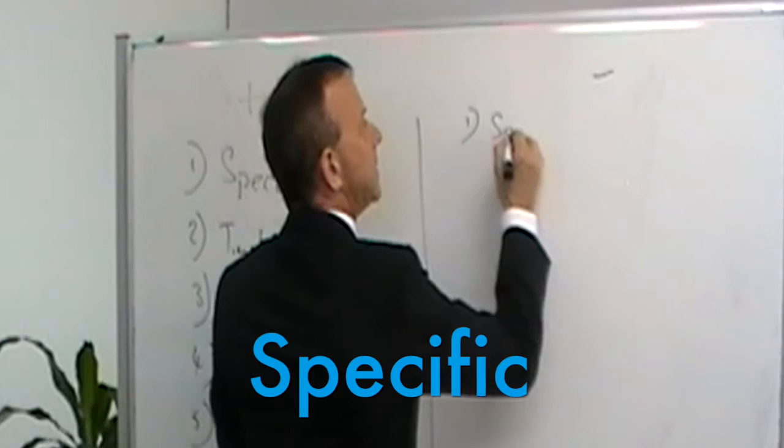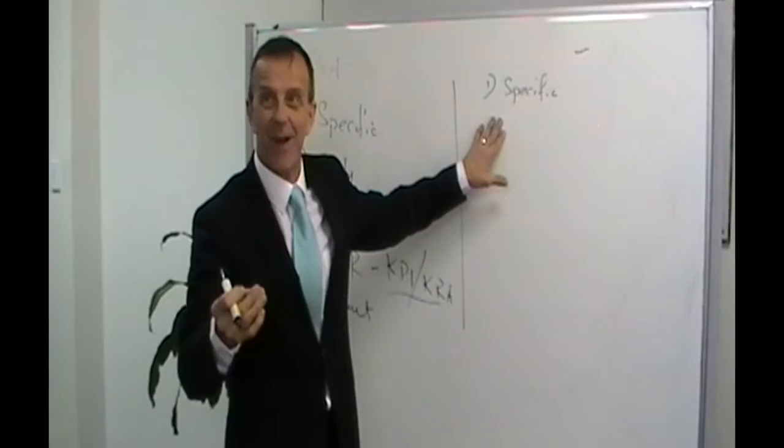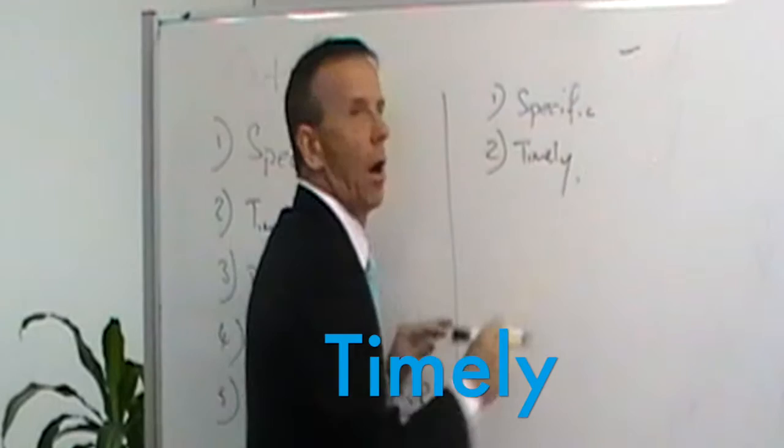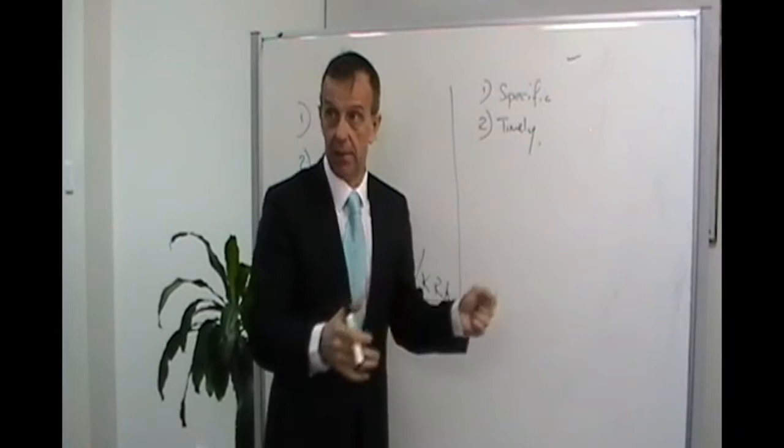And similar to the positive feedback, number one: be specific. The more specific you can be with the feedback, the more impact or the more positive impact in addressing the negative feedback will be. Number two: again be timely. The more immediate you can be after the behavior that you want to change, the more likelihood you'll have in achieving that and the individual will feel better about that.